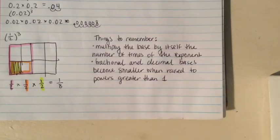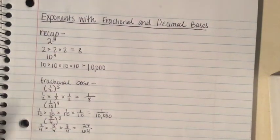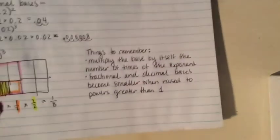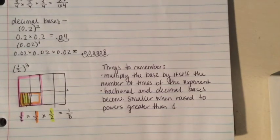So just some things to remember: exponents work the same way no matter what the base is. Just the same as if the base was 2 or one-half, you multiply the base by itself however many times the exponent indicates. Also, fractional and decimal bases, or any number smaller than one, will become smaller when raised to a power greater than one.